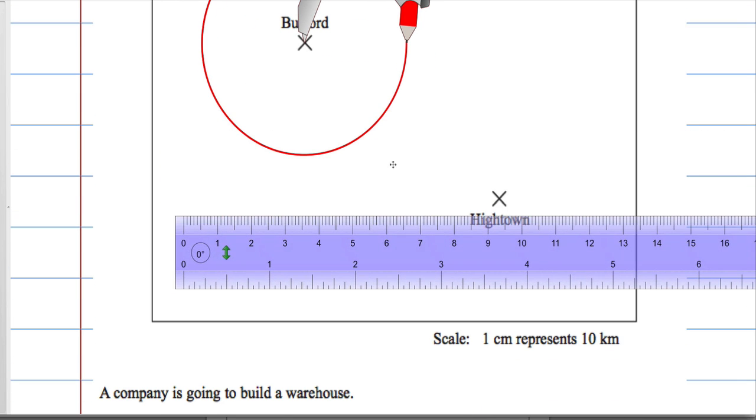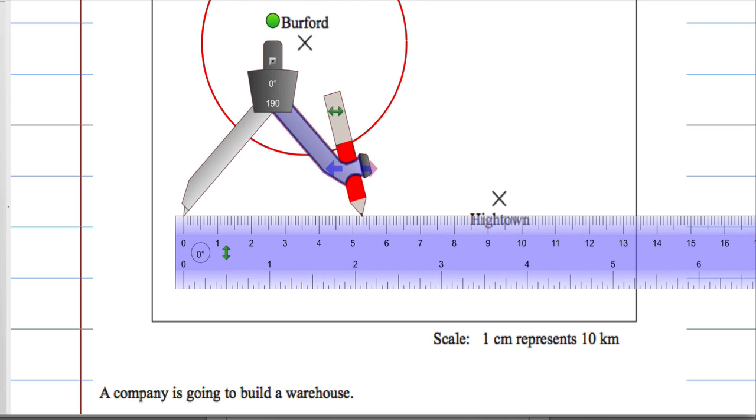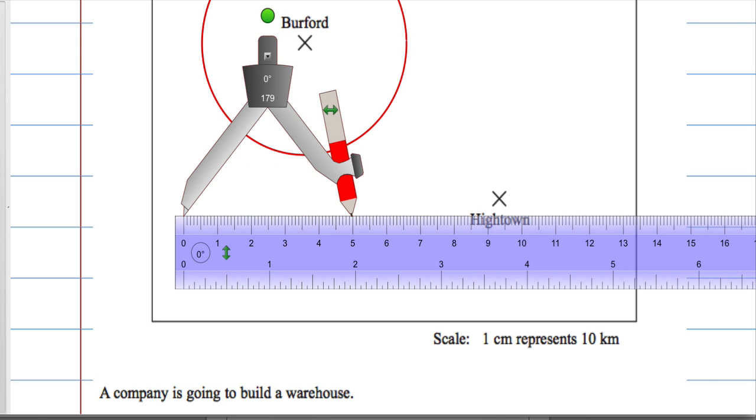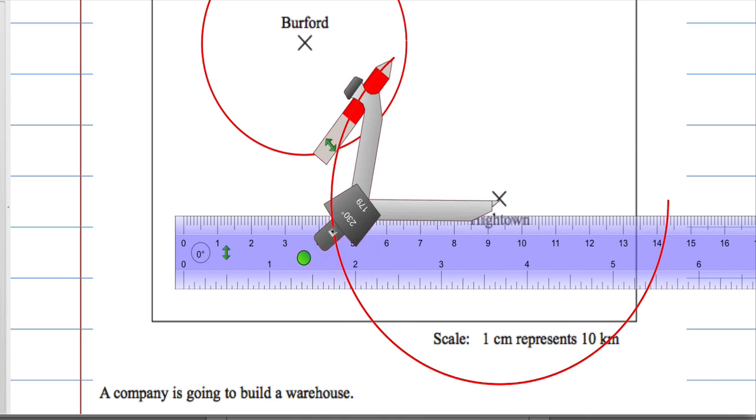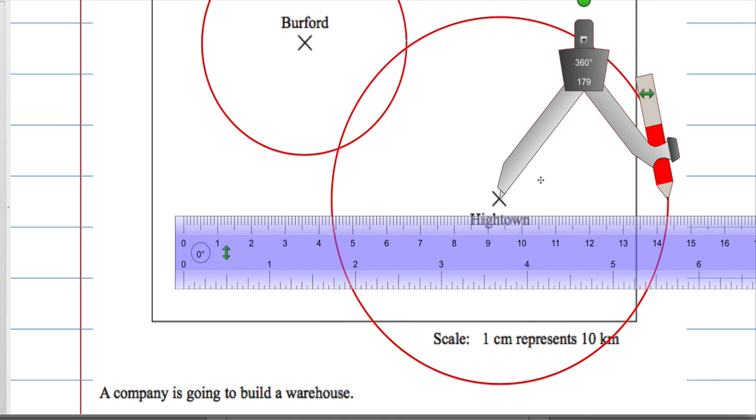And we also need to do 50 km for Hightown. So, let's measure out 5 cm here, so everything within this circle, I am going to go off the page, but it doesn't matter, everything within this circle is within 50 km of Hightown.